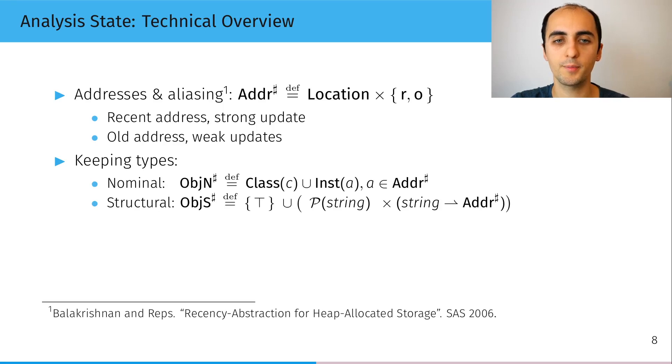Concerning the structural types, we mainly keep a map from the attributes to where they can point to. And since some attributes may only be defined in some branches of the program, we also keep an under-approximation of the attributes that are always defined.